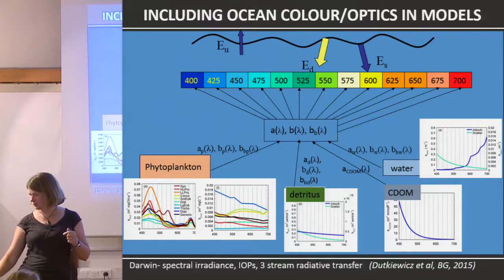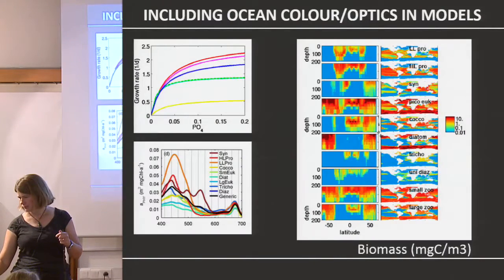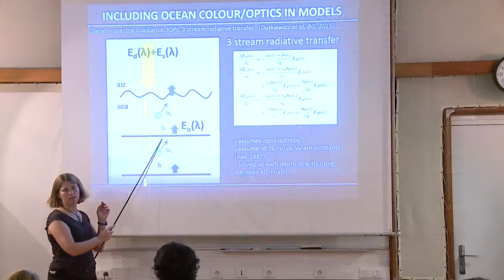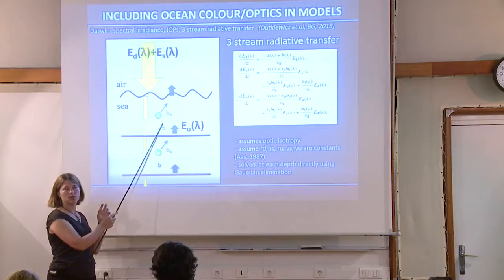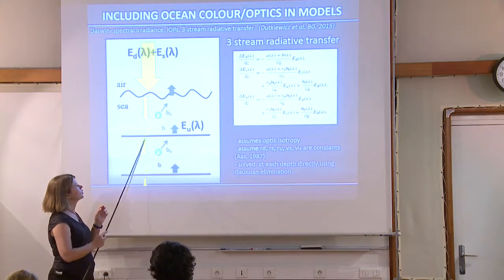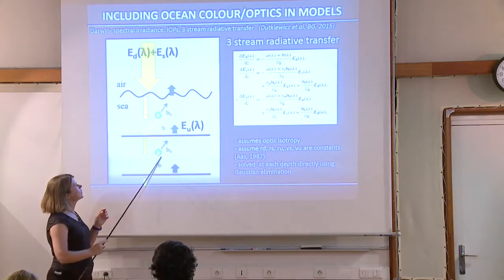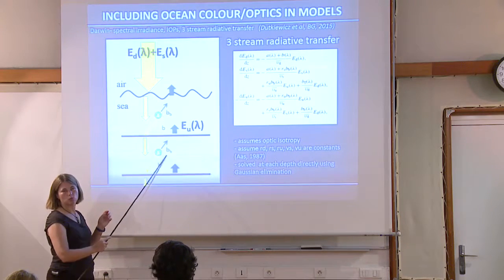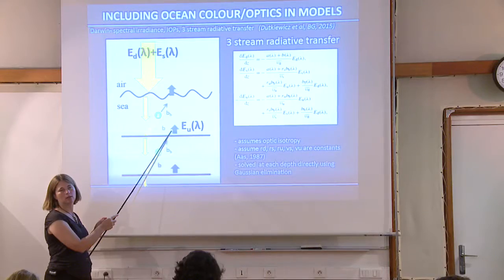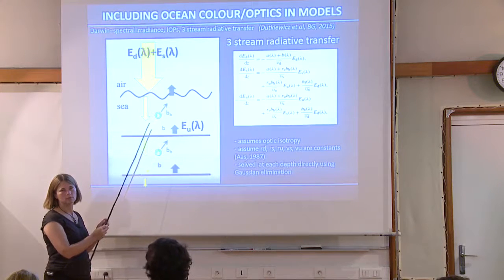For the computation of scatter, at every location — thinking of the model grids — everything absorbs and scatters in the center of the grid cell. Scattering happens there, determining what goes down and what goes up. What comes down is then scattered by what's in the water column below. There is backscattering feedback — it goes into the upwelling light stream.